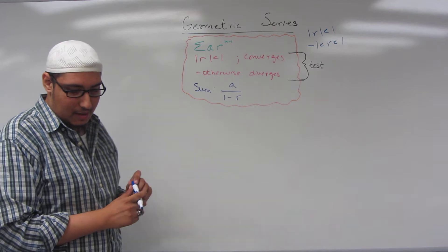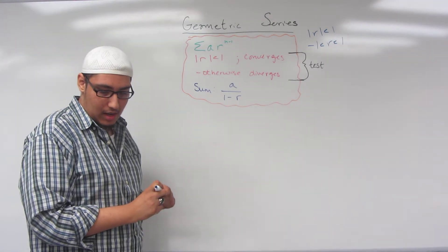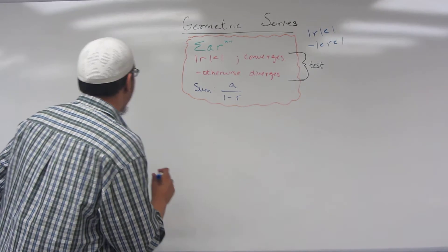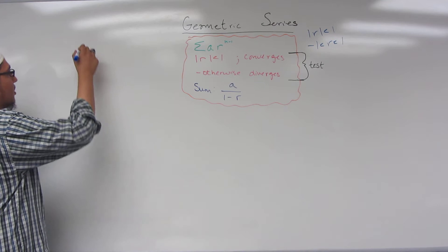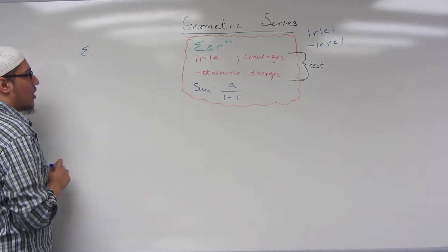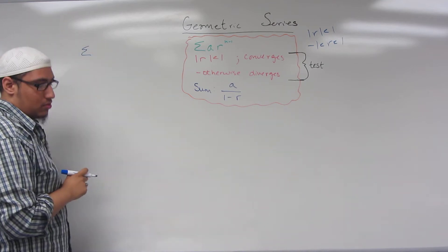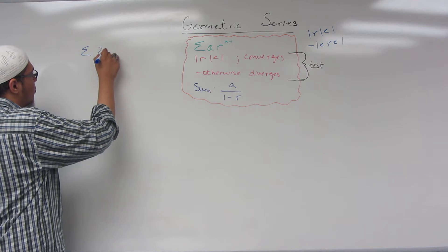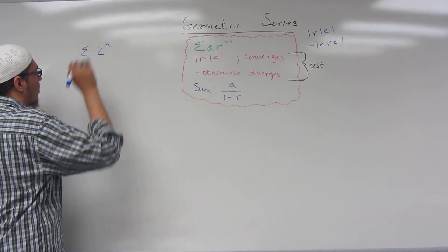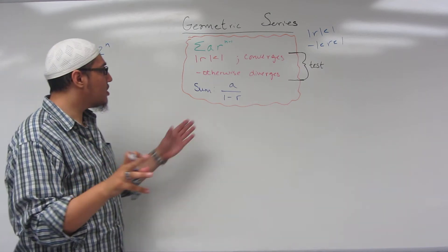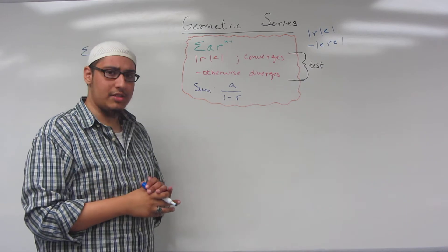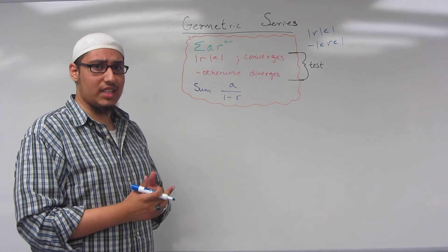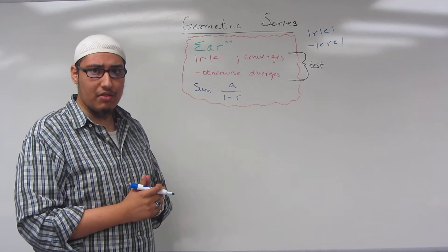Let's go into a couple of examples. Let's say sigma 2 to the N. Keep in mind, although these are geometric series, we can still try to use the N-term test for divergence every once in a while.